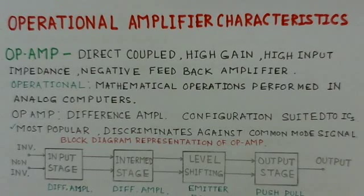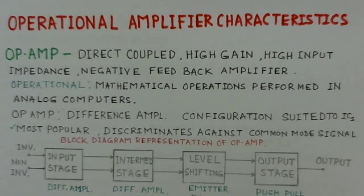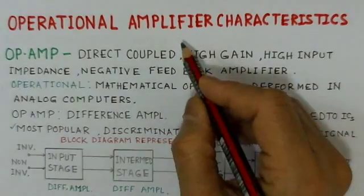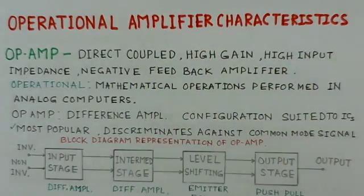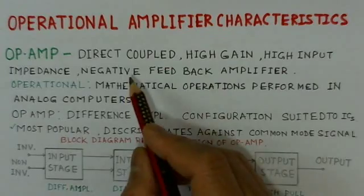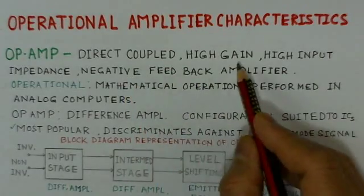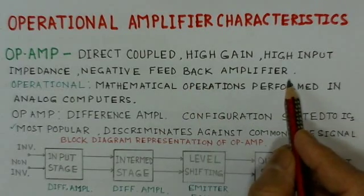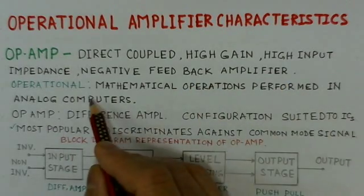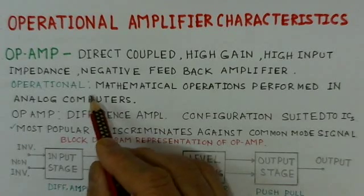The most recent general-purpose operational amplifiers are bipolar field-effect transistors, BiFETs, which are combinations of FETs and BJTs. Now we will start with the operational amplifier characteristics. First, we will define what an operational amplifier is: it is a direct-coupled, high-gain, high-input-impedance, negative-feedback amplifier.